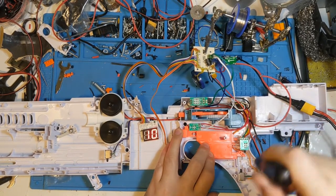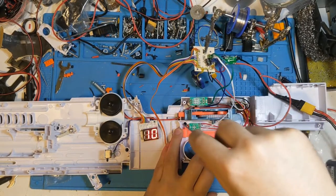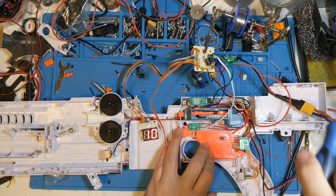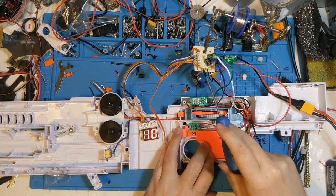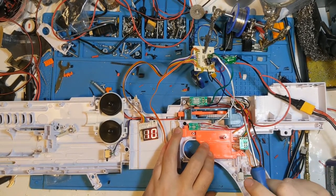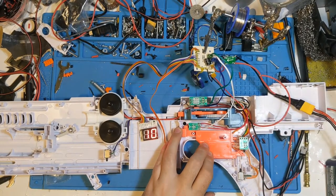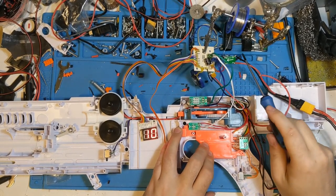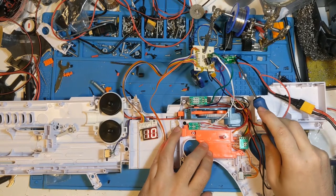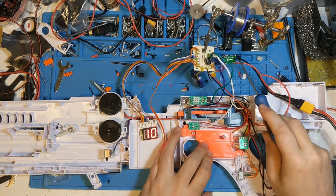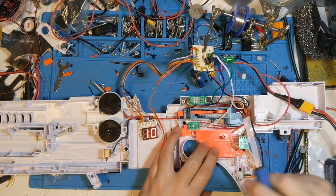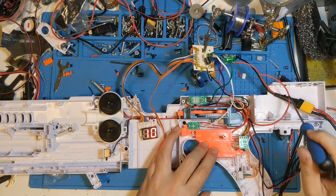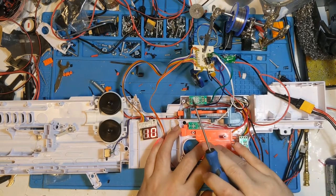This means all the power is coming from this 3S LiPo—currently at storage charge, about 11 volts, which is twice what this board is designed to handle. But because of the buck converter, which is very simple to wire in on either side (it's even got little bits labeled in and out, positive and negative), no matter what you put into it, you're always getting six volts out.